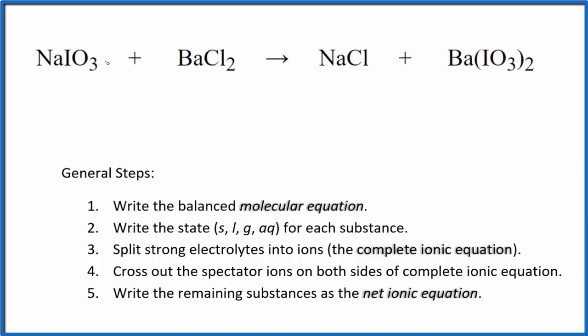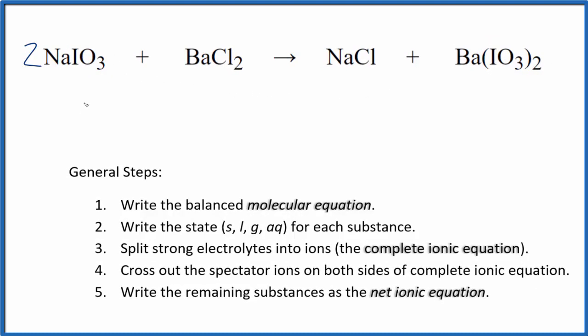To do that, I can see I have the iodate ion, just this one iodate ion here, and over here I have two. So let's put a two in front of the sodium iodate. That balances those iodates. Now we have two sodiums, two here, sodiums are good, two chlorides, two chlorides, barium and barium. That's the molecular equation, so that's balanced.